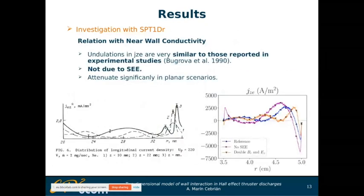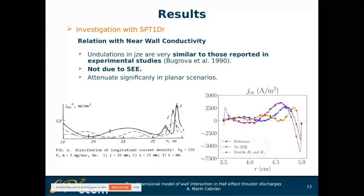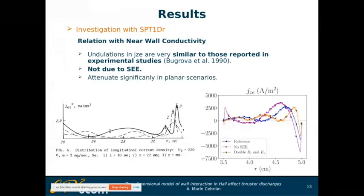The question is whether these undulations are physical or just an artifact of our simplified 1D model. They seem to be somehow related to near-wall conductivity, which was already reported in the 1990s by Bugrova. This is one profile from that experimental study and this is our simulation. However, they used to explain this behavior as due to secondary electron emission from the wall, whereas our simulation shows it is not due to that, but rather due to non-Maxwellian effects in the equations.